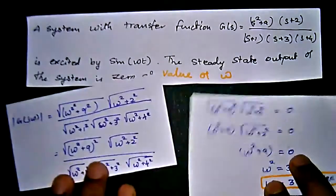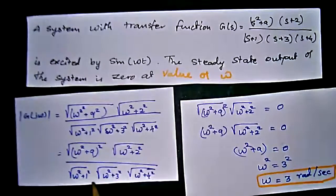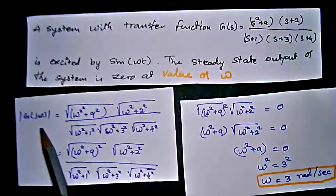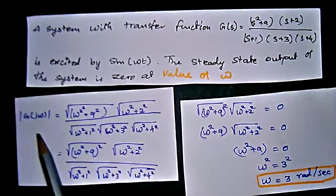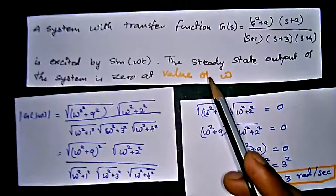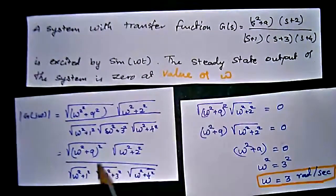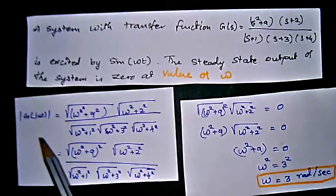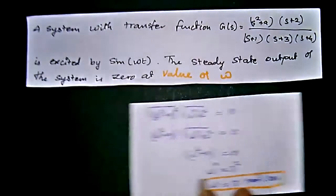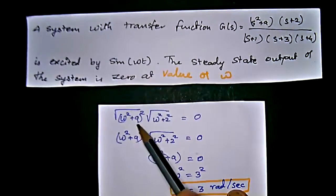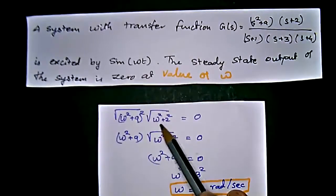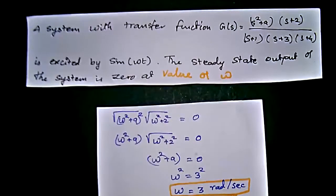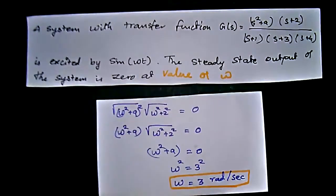The denominator terms will not be zero; if any denominator term were zero, G(jω) would become infinite, which contradicts the requirement. So for the steady state output to be 0, we need the numerator to be zero. The numerator is √(ω²+9)² · √(ω²+4), and we need one of these numerator terms to equal 0.